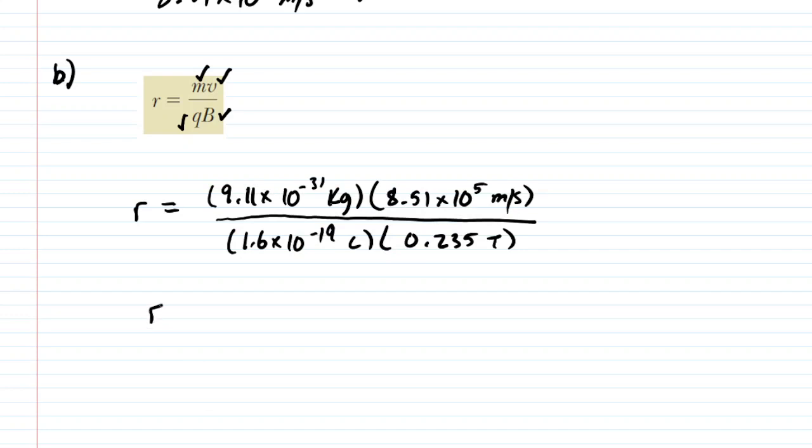When we plug these values in we get a radius of approximately 2.06 × 10⁻⁵ meters. Your homework system might want you to do micrometers because it's such a small value. So we'll set up a conversion factor.